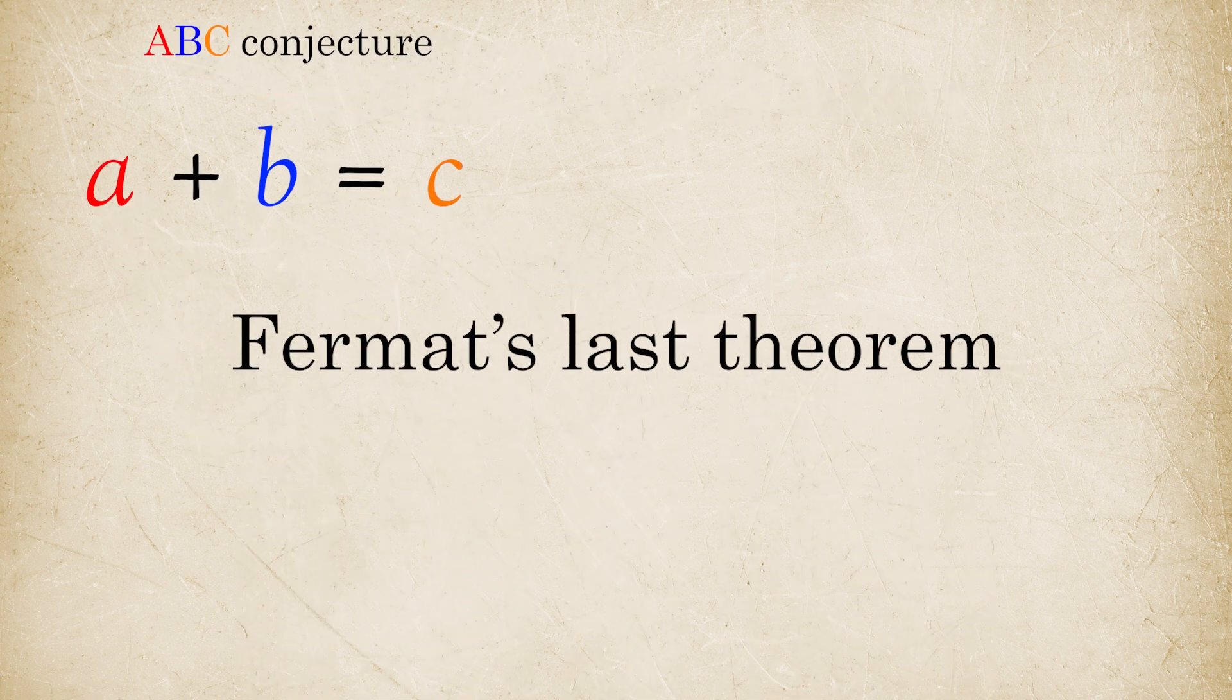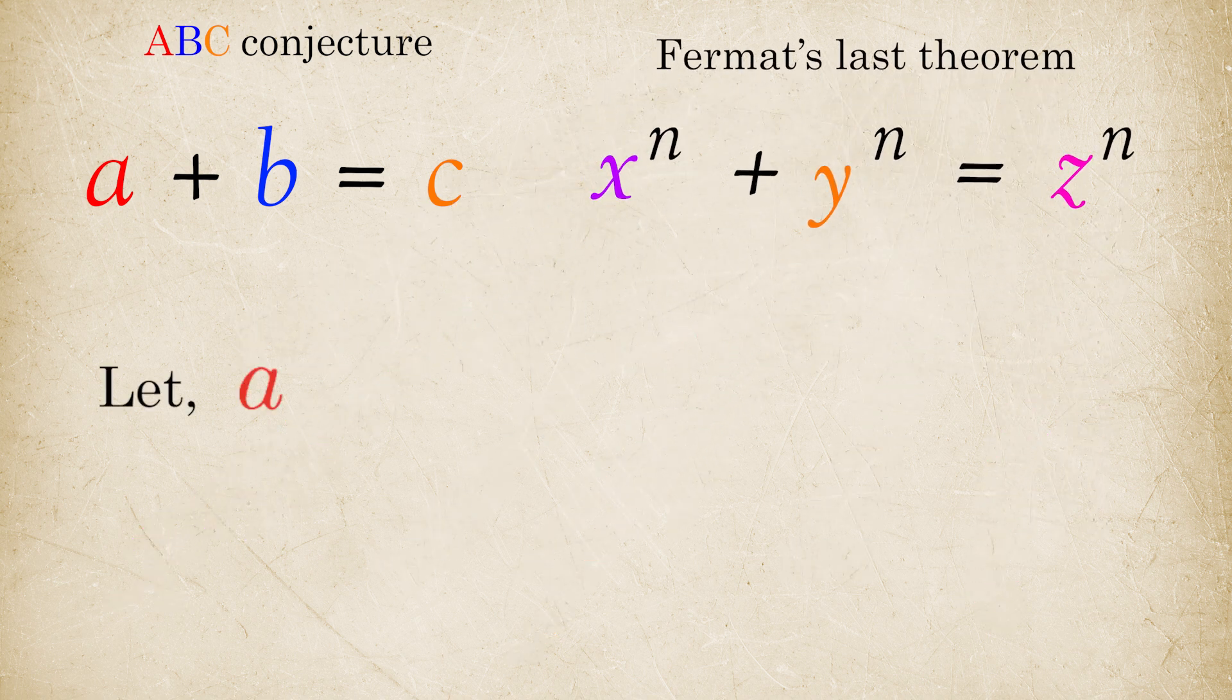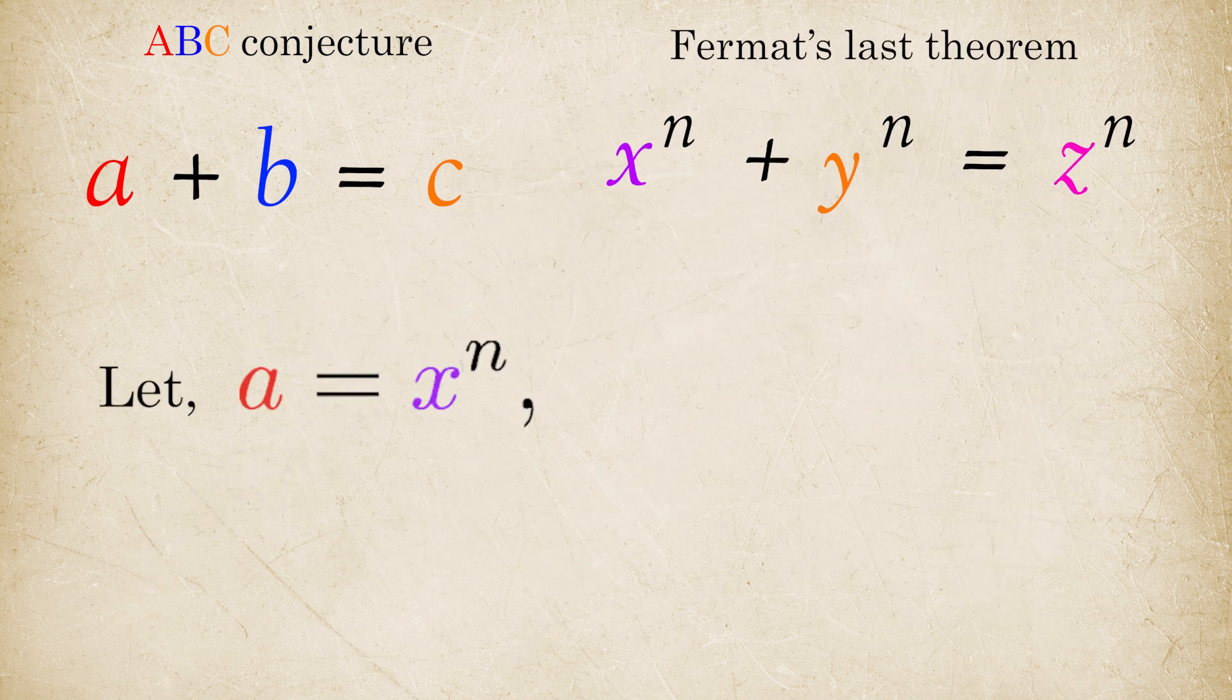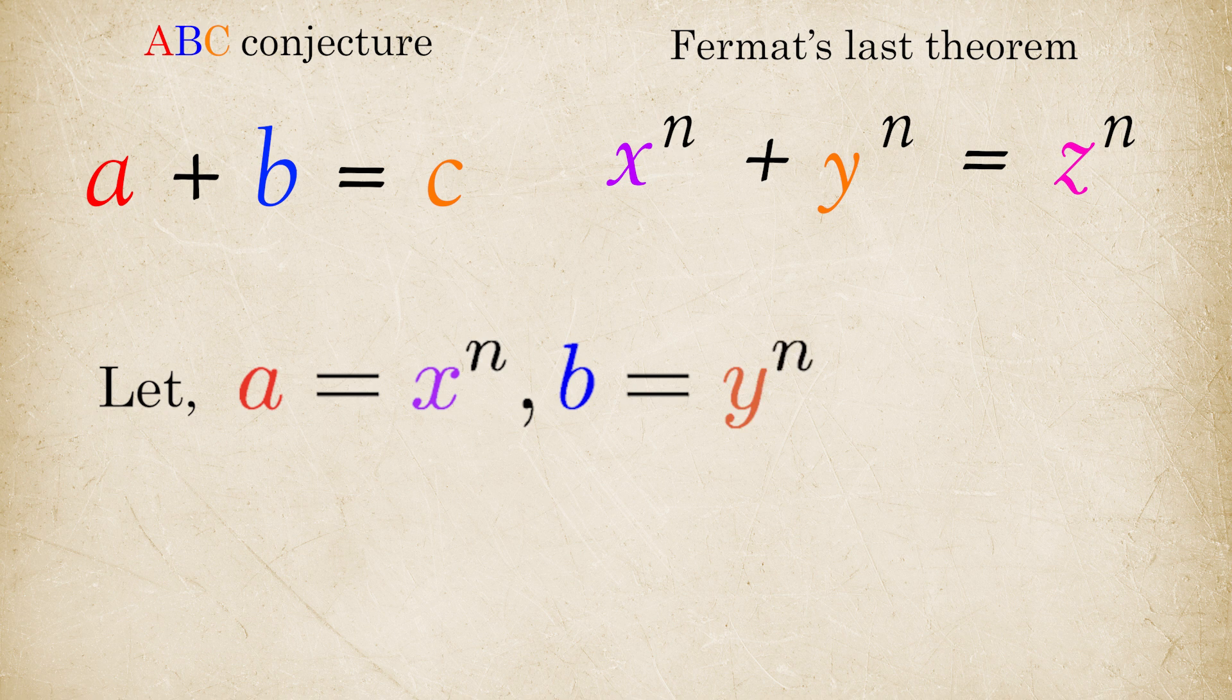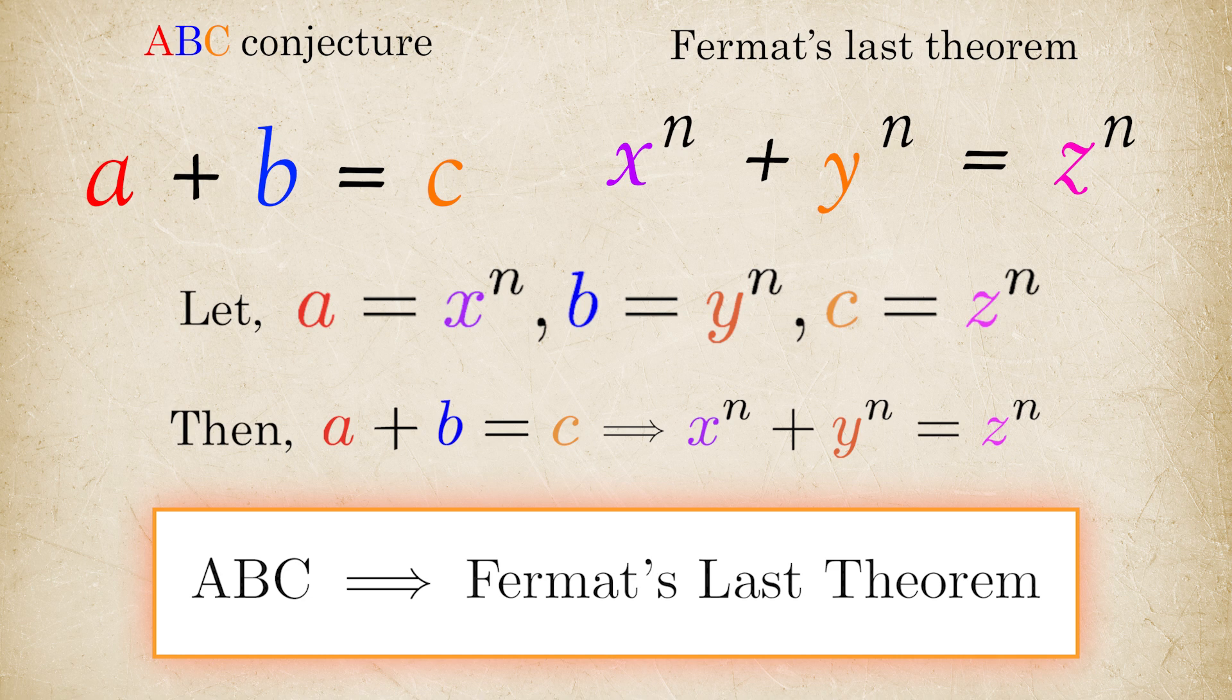But why study something so basic? Well, look at Fermat's Last Theorem. It has exactly the same structure as ABC if we just set A equals X power N, B equals Y power N, and C equals Z power N. Indeed, a version of the ABC conjecture does imply Fermat's Last Theorem. With this motivation, let's dive into ABC conjecture.